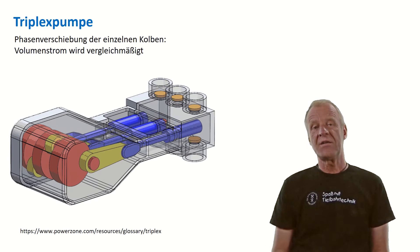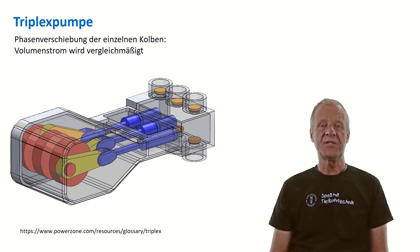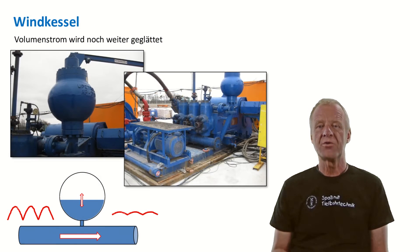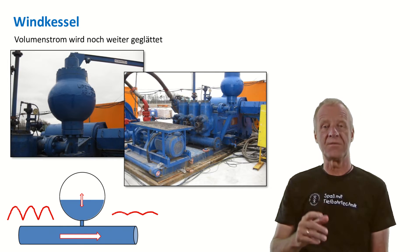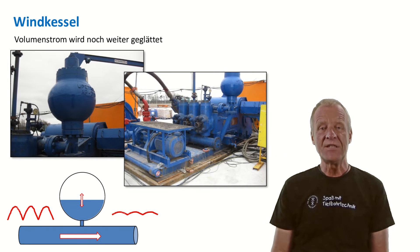However, this is not enough for our application. For further smoothening of the flow rate, there is a sort of big balloon installed in the pressure line of each triplex pump. This balloon is called an air vessel. We will see how it works here in our experiment.